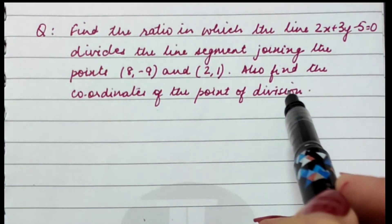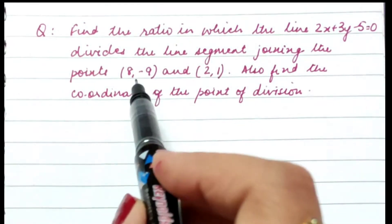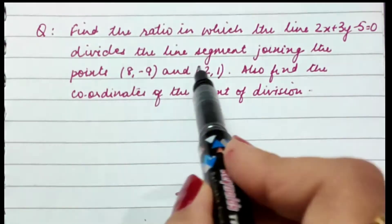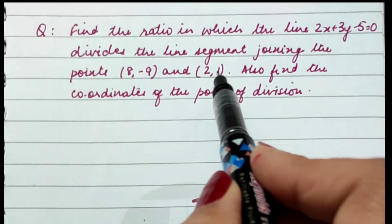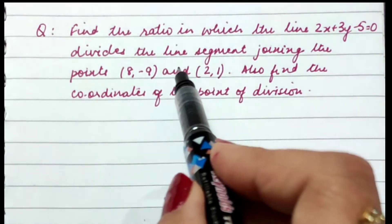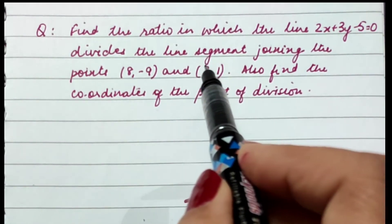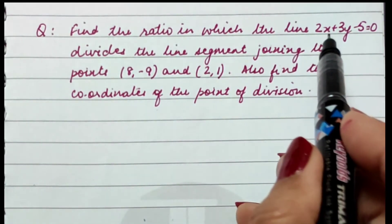Understand the question properly. I have two points (8, -9) and (2, 1), and there's a point which divides this line segment in a particular ratio and also lies on the given line.